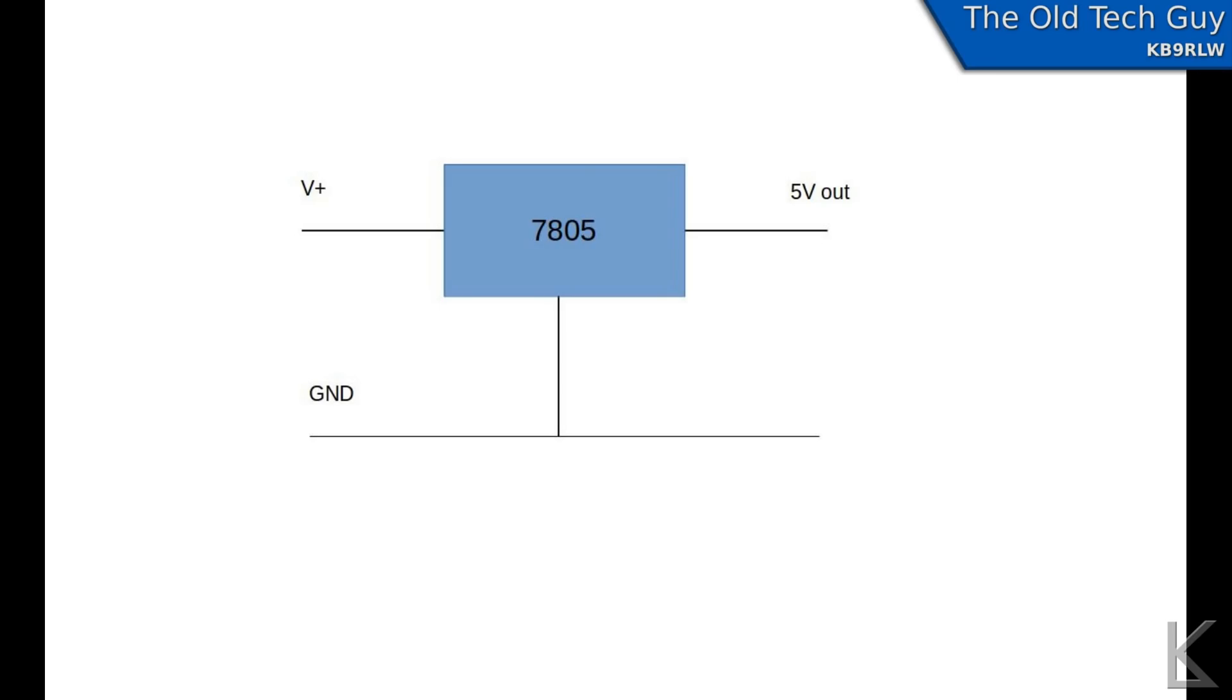Now, what we're interested in here is the center pin, the ground. Very little current flows through that pin. That's there to provide a reference for the regulator circuitry inside the 7805 that it uses to reference for its output regulation.